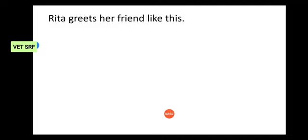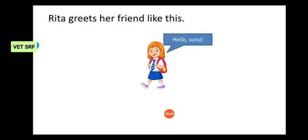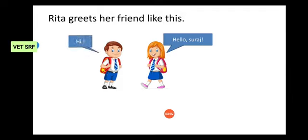Rita greets her friend like this. Rita is a girl. She is greeting her friend. Hello, Suraj. So, what is Suraj doing? He is also repeating. He is not simply standing. Hi. Like this.